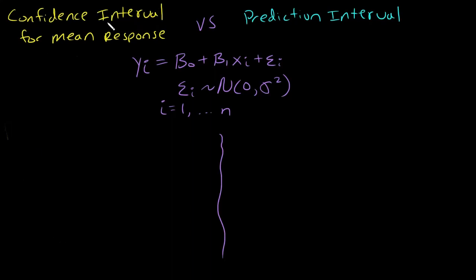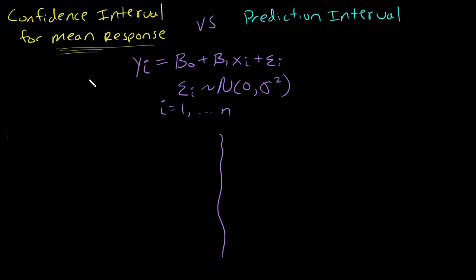So what is a confidence interval for a mean response? First, let's think about what mean response means. This is the average response for a particular value of x. You give us an x value and we'll tell you what the average response is. If this model is true, that average is a fixed number — I should be able to calculate it exactly if I knew beta naught and beta 1. We don't know these, so we'll have to estimate them, and we want to construct an interval where 95% of the time that interval contains the true mean response value.